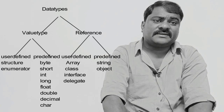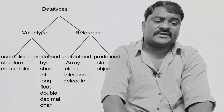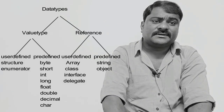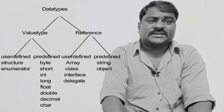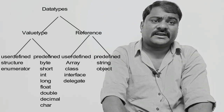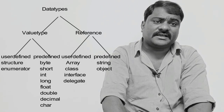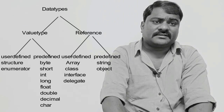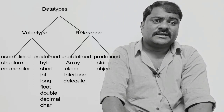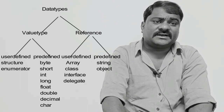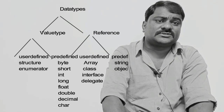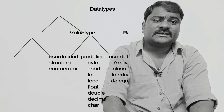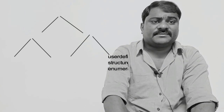Reference type data types are again two types: user defined reference type data type and predefined reference type data type. User defined reference type data types are array, class, interface, and delegate. String and object data types come under predefined reference type data types.